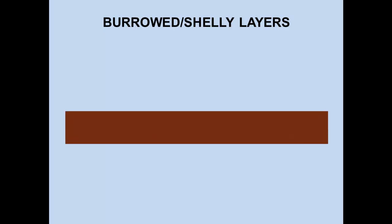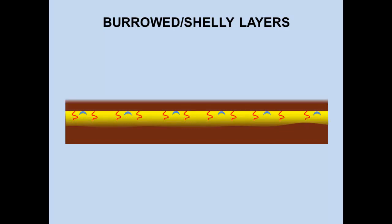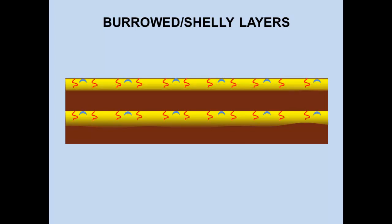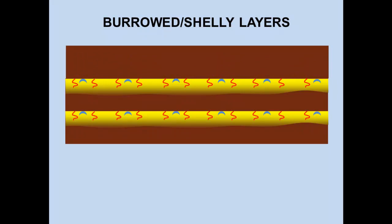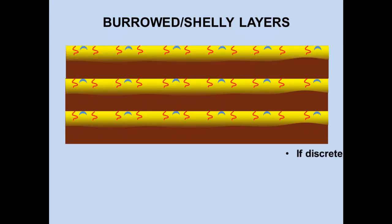Burrowed shelly layers have been discussed in a number of recent papers. If you have organic-rich shale deposition, then a burrowed interval, then another organic-rich mud interval, another burrowed interval, and so on repeating, the significant point is that if they're discrete, they must be episodic. Because if you didn't have episodicity, the organisms would just homogenize the sediment and everything would be burrowed up. In order to recognize them as discrete intervals, it would have to be something that happened only occasionally rather than continuously. The burrowed zones don't represent what's going on there most of the time — they represent what's going on occasionally.